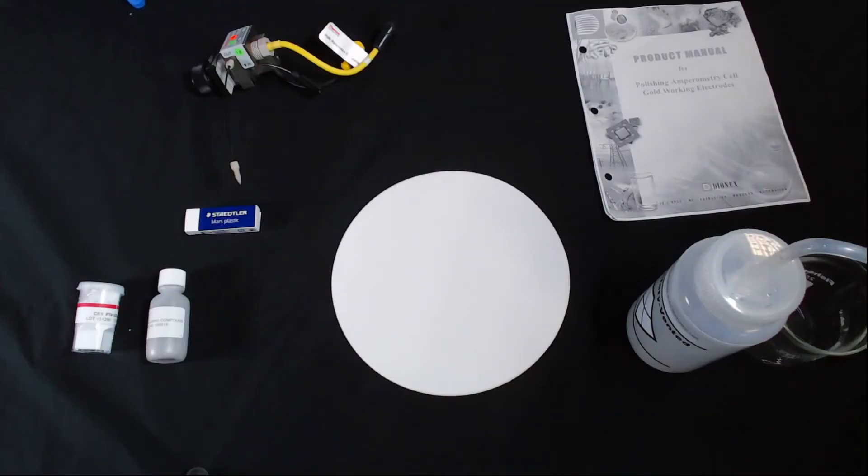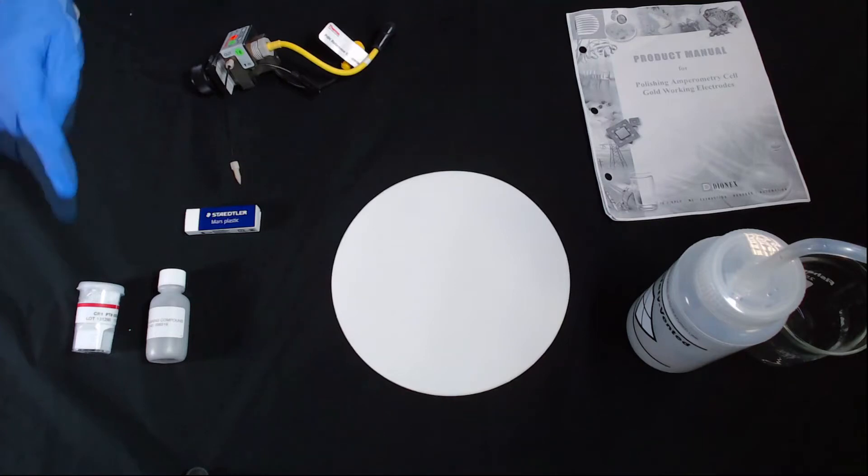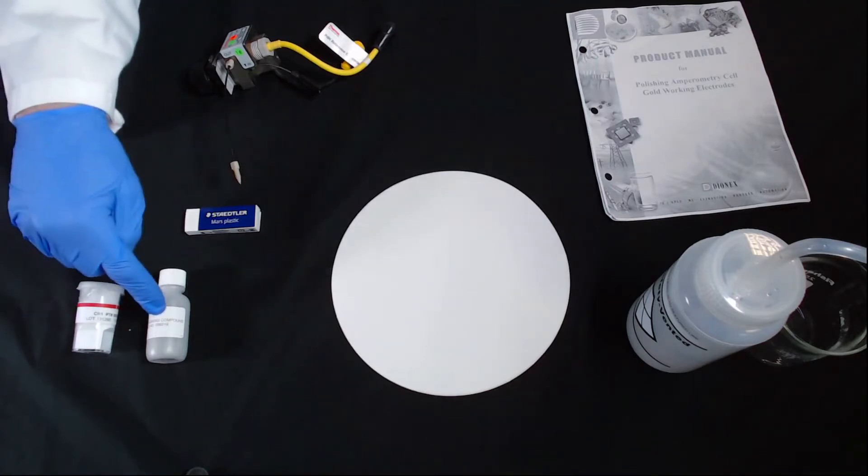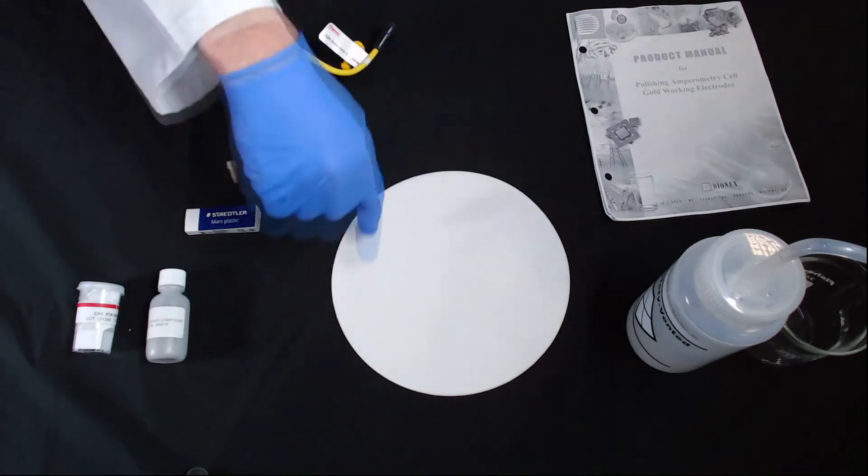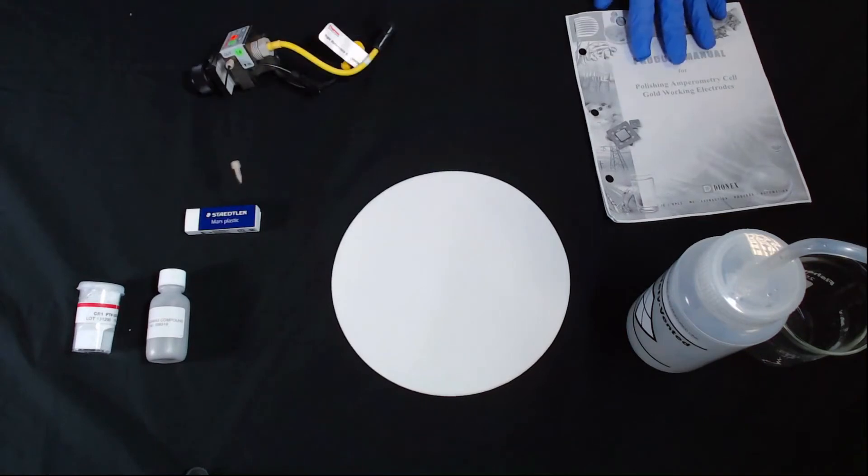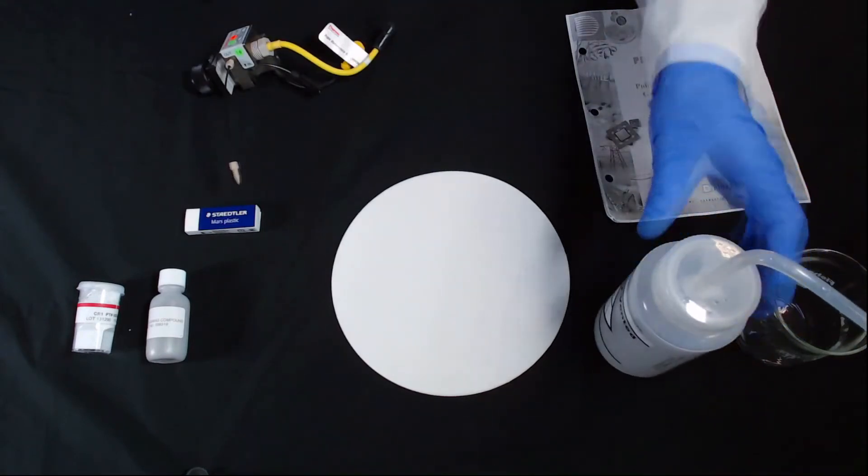There's a polishing kit available to polish the working electrode. In the kit you'll get the fine and coarse polishing compound, some discs to do the polishing on, and a set of instructions. You'll also need some deionized water.